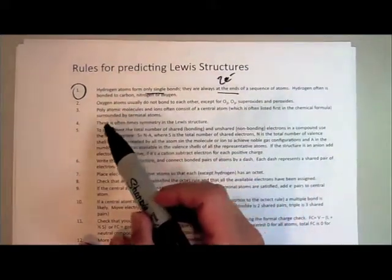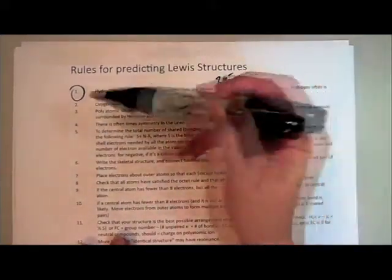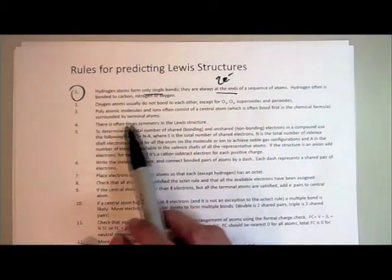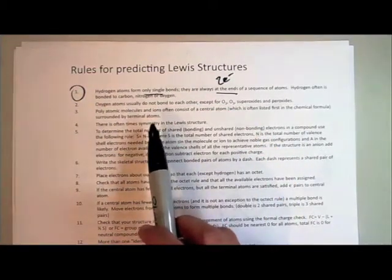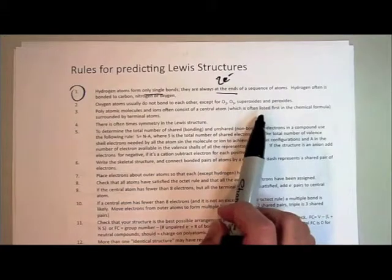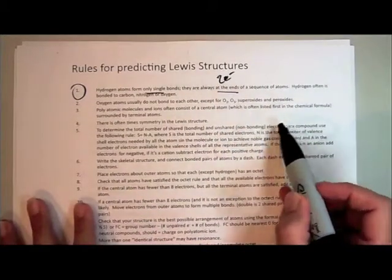One other rule of thumb: polyatomic molecules and ions often consist of a central atom, which is normally listed first in the chemical formula. That helps us get started, knowing what's in the middle with an educated guess.